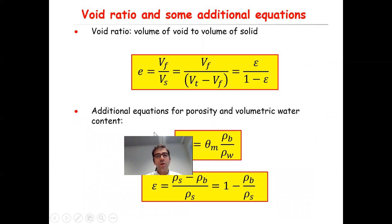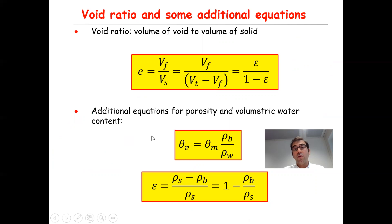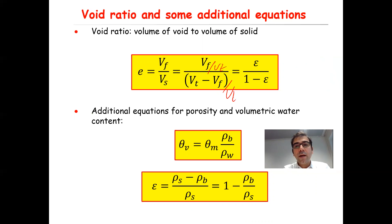Another definition is the void ratio, defined as the volume of void — or volume of fluid — divided by Vs, the volume of the solid. In other words, you can write Vf divided by volume of solids equals total volume minus volume of fluid. If you divide everything by Vt, then Vf divided by Vt is the definition of porosity, Vt divided by Vt is one, and Vf divided by Vt is epsilon. So void ratio equals porosity divided by one minus porosity.